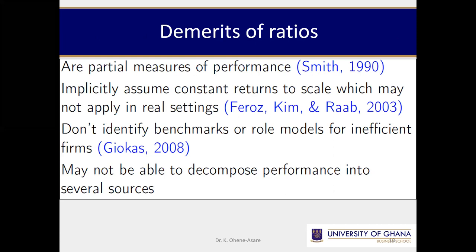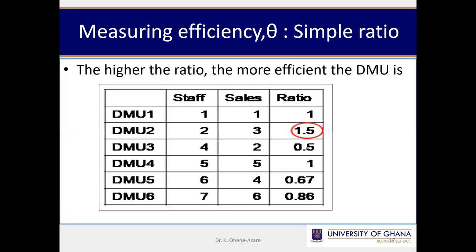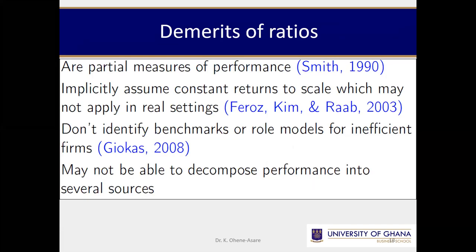Implicitly, ratios also assume constant returns to scale, which is not real, because some markets deal with variable returns. Constant returns means that if you increase the denominator by 10 percent, you have to increase the numerator by 10 percent — if you double the inputs, you will double the output. But in real life, you can double the inputs and the output will not double, because the inputs will start lazing about — making life variable, not constant.